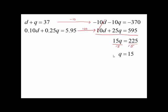I can take this solution and plug it back into the first equation to easily solve for D. Put in 15 for Q, subtract 15 from both sides, and we get that D is 22. We were asked for how many dimes Luz has, and D represented the number of dimes, so Luz has 22 dimes.